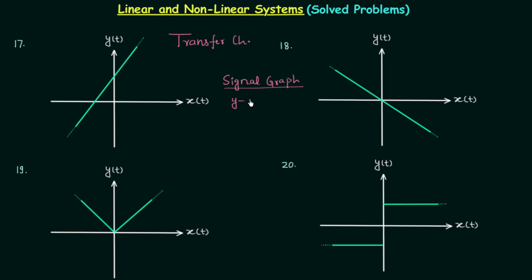In a signal graph, the y-axis is the output of the system and the x-axis is the independent variable, which is time t. In signals and systems, the independent variable is usually time because a signal is the variation of electrical quantities like voltage and current with respect to time.